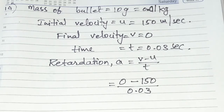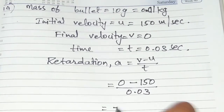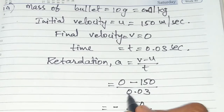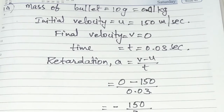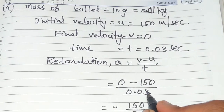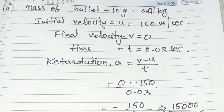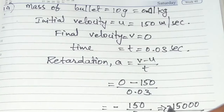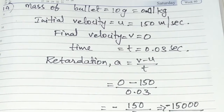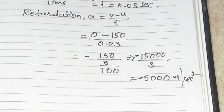Using the formula a = (v minus u) / t: that is (0 minus 150) / 0.03. This gives minus 150 divided by 0.03. Writing 0.03 as 3/100, we get minus 150 into 100 divided by 3, which equals minus 5000 meters per second squared. This is retardation — negative acceleration.